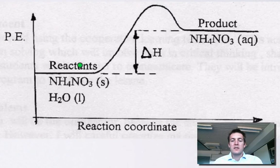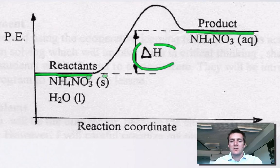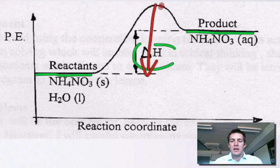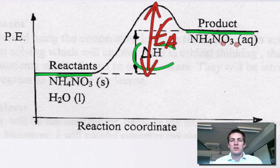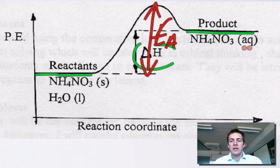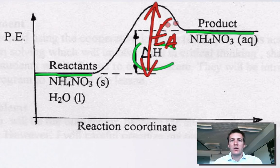Here we've got quite an unusual thing — an endothermic change, with delta H marked as positive because enthalpy increases going from reactants to products. We can also mark the activation energy on here, and it looks quite large because of the scale the diagram is drawn on. This is actually the energy level diagram for dissolving ammonium nitrate in water to form ammonium nitrate aqueous. This dissolving process is endothermic, which is quite unusual because it happens spontaneously, meaning the activation energy must actually be quite small — as is the enthalpy change for this process.